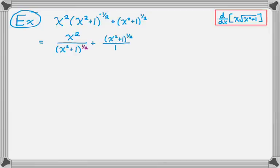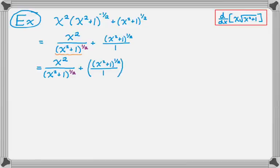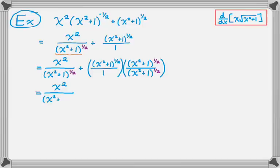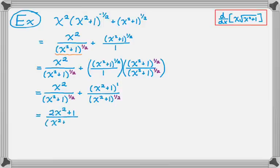I'll put the second term over 1. The common denominator is anything that shows up in either denominator — just the quantity x squared plus 1 to the 1/2. The first fraction already has it, so that's done. For the second term, I multiply the top and bottom by the quantity x squared plus 1 to the 1/2. When you multiply (x²+1)^(1/2) times (x²+1)^(1/2), that becomes (x²+1) to the first power, which is just x squared plus 1, all over the common denominator. Combining like terms gives 2x squared plus 1, over the quantity x squared plus 1 to the 1/2.